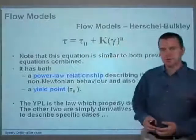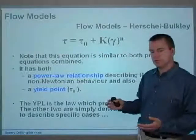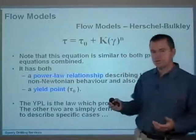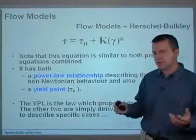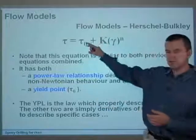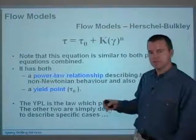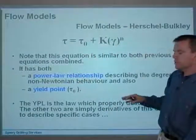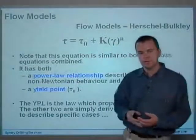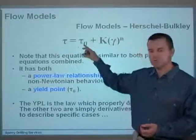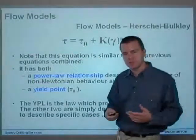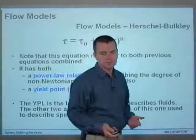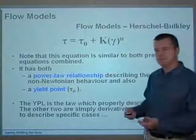The equation is similar to both the previous equations combined — though that's not to say it was derived from them. In actual fact, the previous equations were approximations of this equation, which fully describes a fluid. It has a power law relationship describing non-Newtonian behavior, and it also has a yield point, tau-zero. The yield power law is actually the law which properly describes fluids; the other two are simply derivatives of this one, used to describe specific cases.